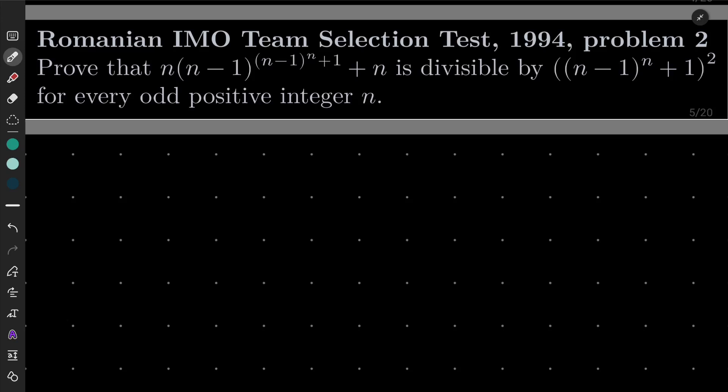Hello friends. In this video I'd like to solve the following problem from the Romanian International Mathematical Olympiad team selection test 1994, problem number two. We wish to show that this number — n times n minus one to the power n minus one, to the power of n plus one, plus n — is divisible by n minus one to the power of n plus one squared, for every odd positive integer n.